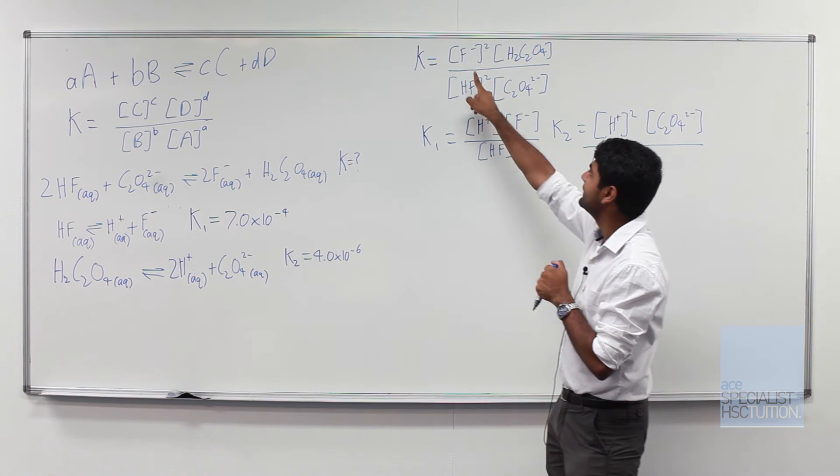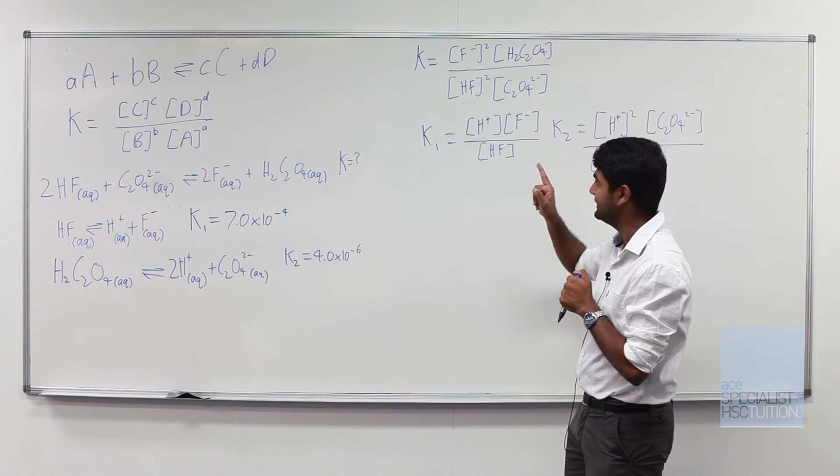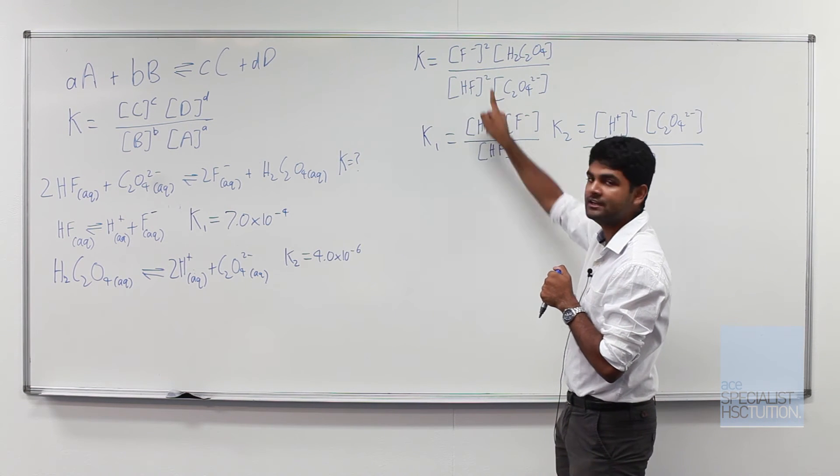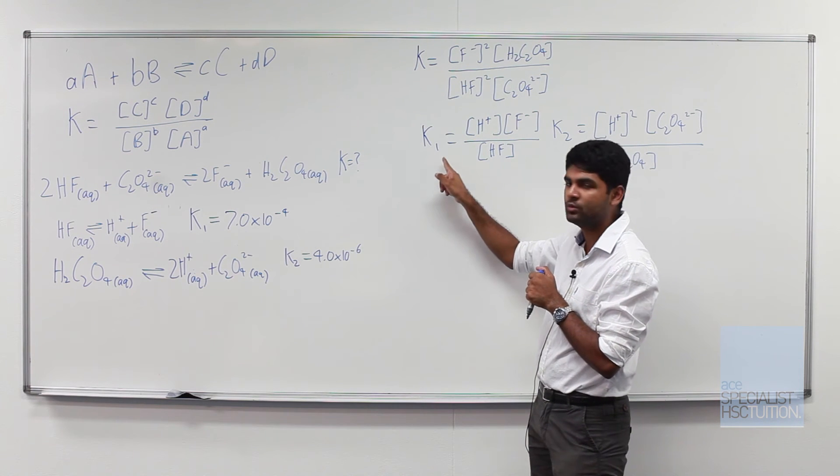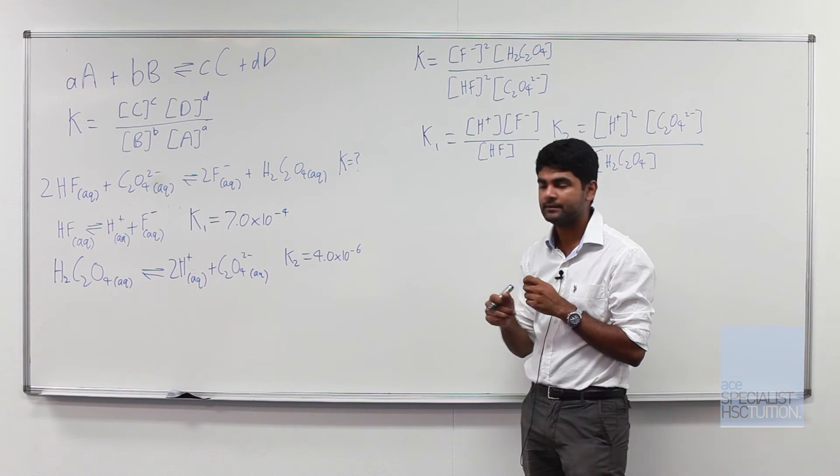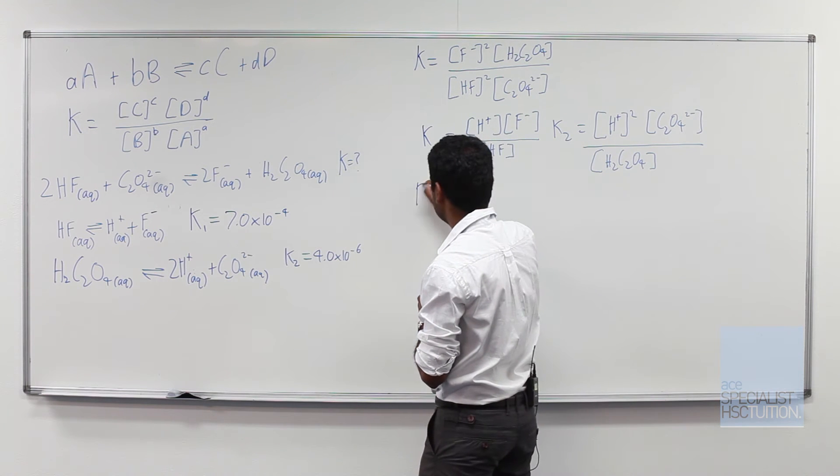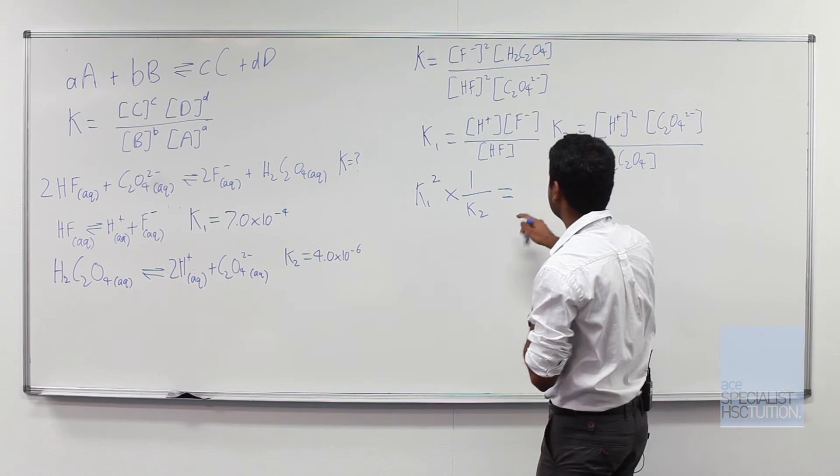At the same time there is an F- squared there, only an F- here. There's an HF squared but only an HF here. So what that means is we need to square K1 to help us give K. So what we do is K1 squared multiplied by 1 over K2.